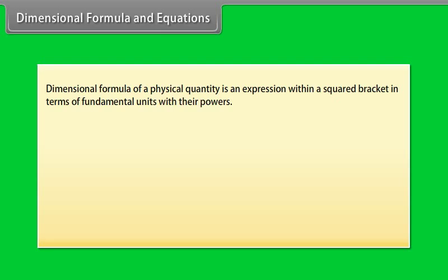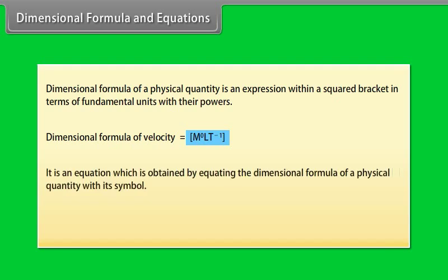Dimensional formula and equations: Dimensional formula of a physical quantity is an expression within squared brackets in terms of fundamental units with their powers. Let us take an example: dimensional formula of velocity = [M⁰LT⁻¹]. It is an equation which is obtained by equating the dimensional formula of a physical quantity with its symbol. Let us take an example: dimensional equation of velocity is v = [M⁰LT⁻¹].